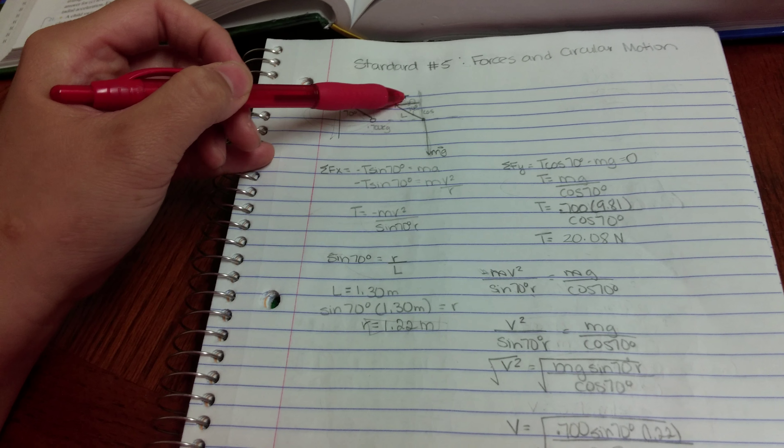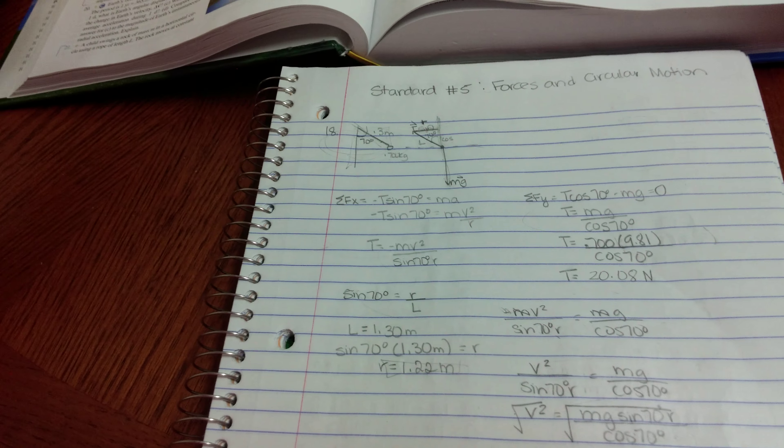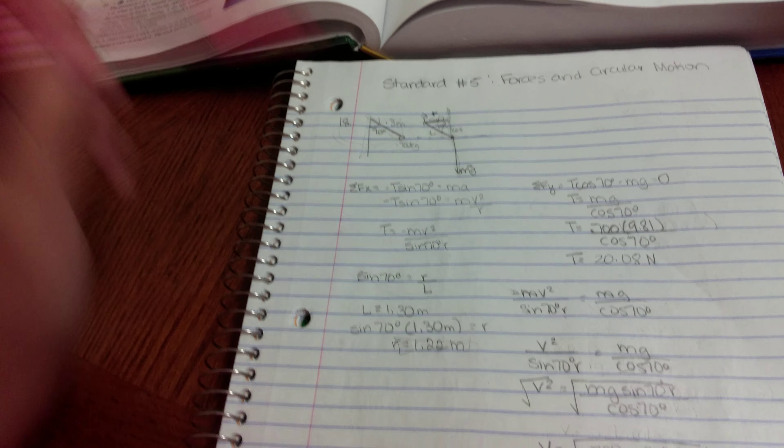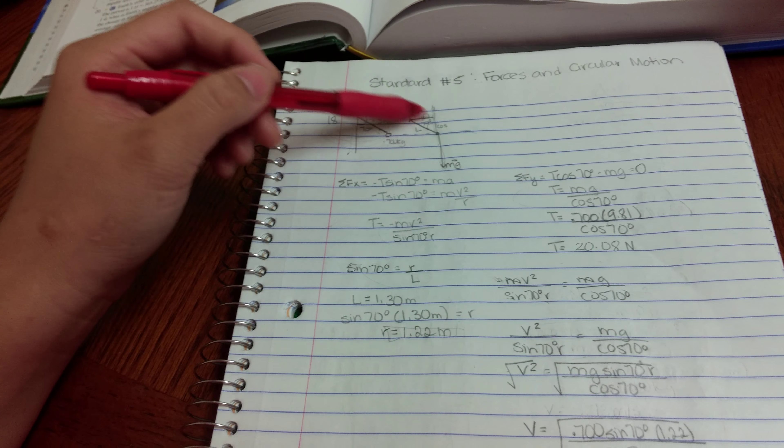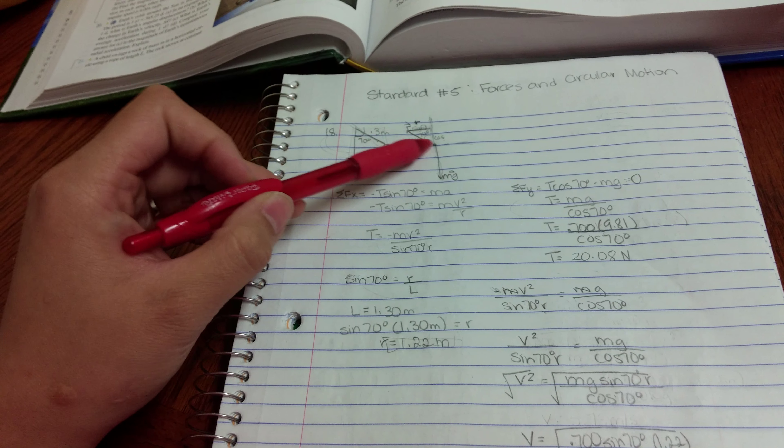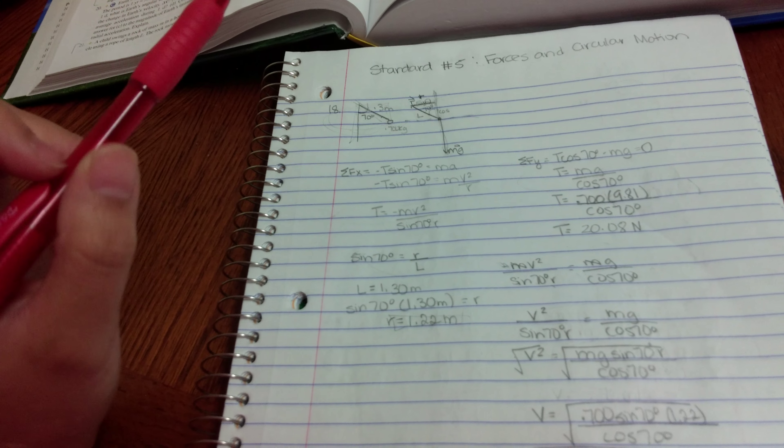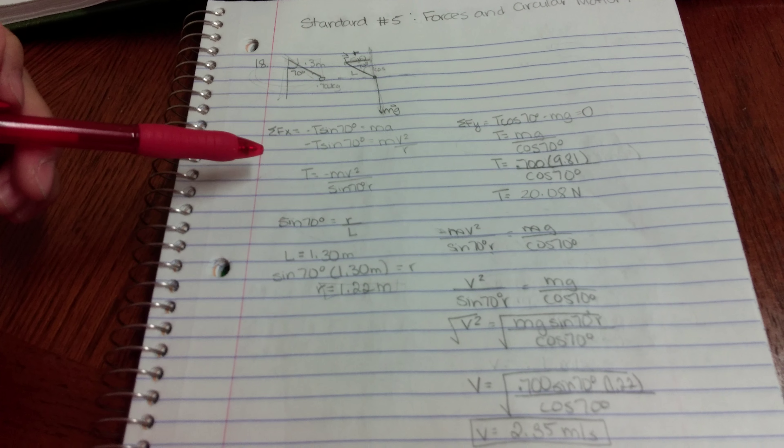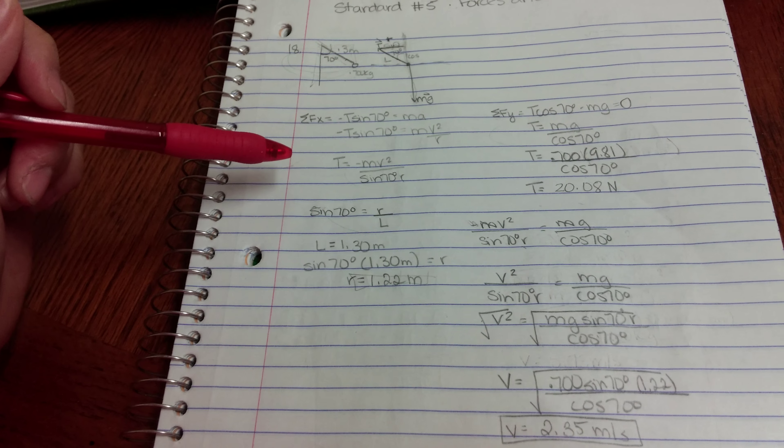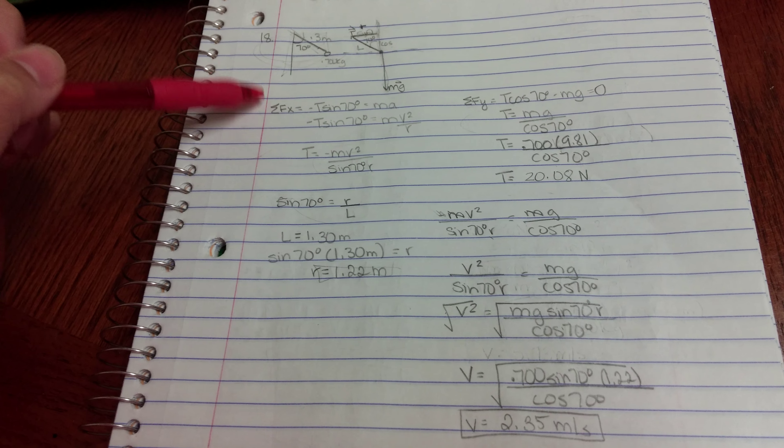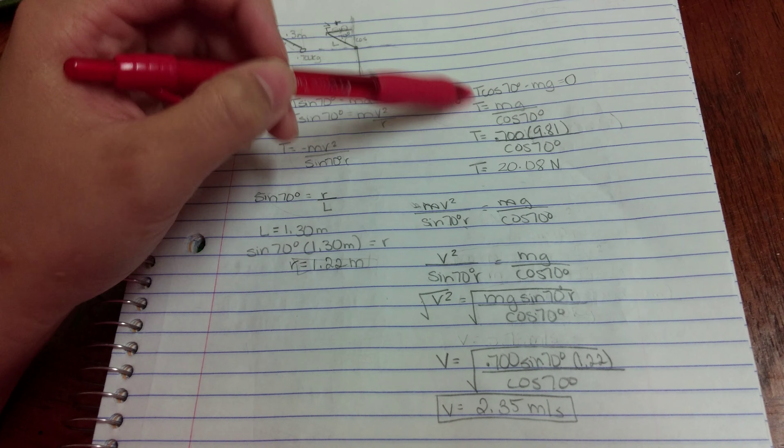Because it's telling me that it rotates about the pole's symmetry axis. And I have my length right here, which is the same thing over here, 1.3 meters long. And then to solve for the tangential speed, what I did was I did all of my sum of the x components and sum of y components.